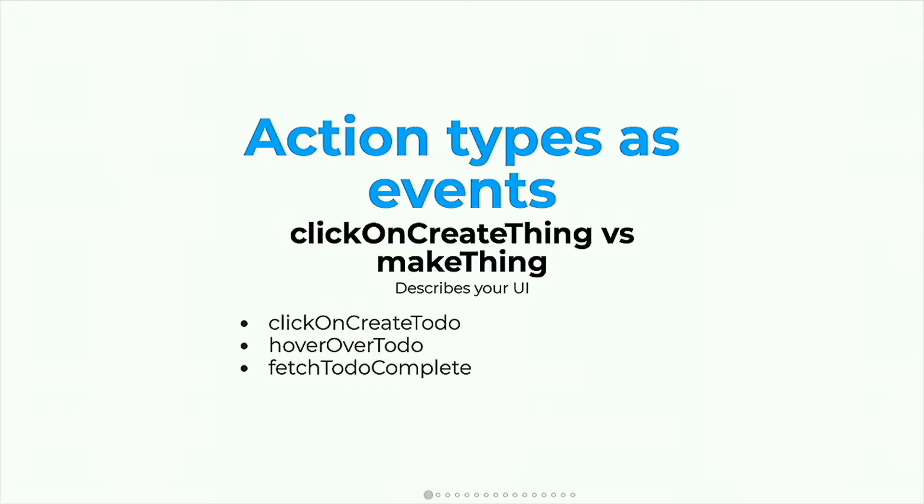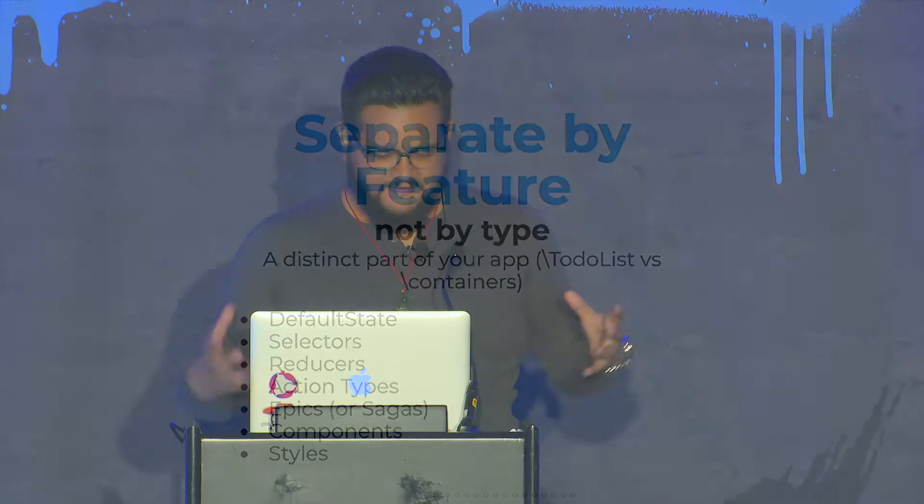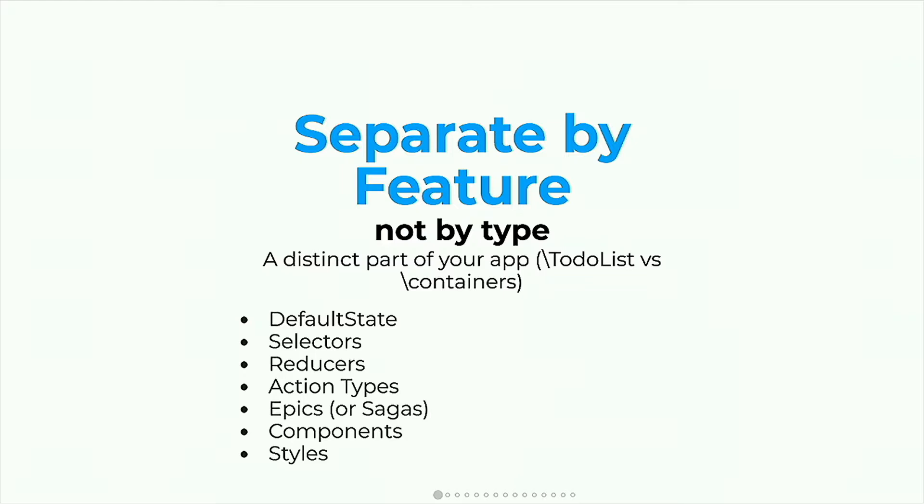Another guideline is separation by feature and not by type. If you've ever looked at a Redux tutorial, you'll see this very common file structure: actions, reducers, action types. You see separation by the type of Redux architecture. But when you have a large app that gets really cumbersome — now you have hundreds of files in your action types, hundreds of files in your reducers folder, hundreds of selectors, and they're all separated. You have to grab your entire codebase to figure out where these things are. So what I advocate for is separation by feature.